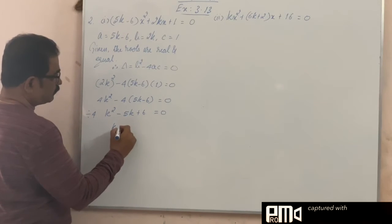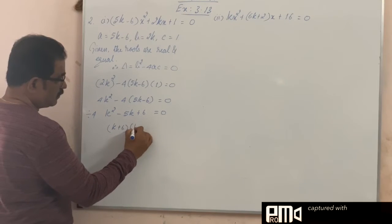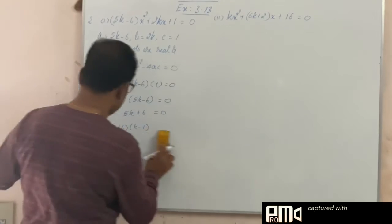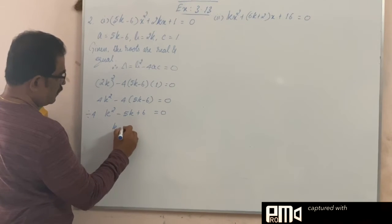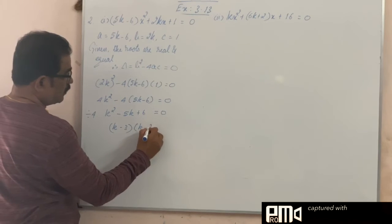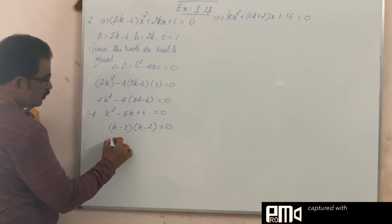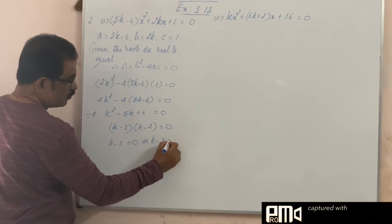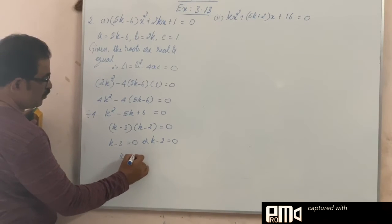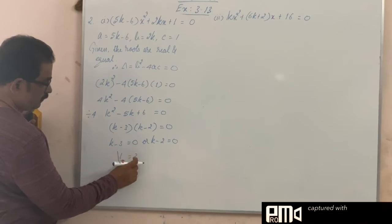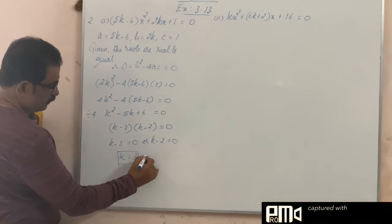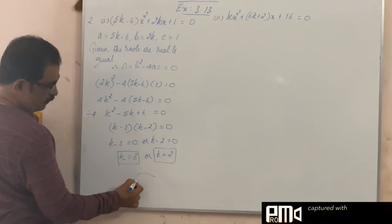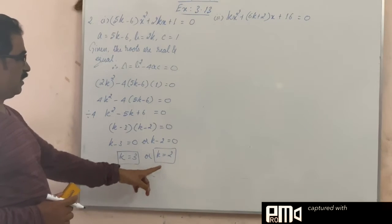We get k minus 3 into k minus 2 is equal to 0. So, either this k minus 3 is 0, or k minus 2 is 0. k minus 3 is 0 means k is equal to 3, or k is equal to 2, 2 values, 3 and 2.